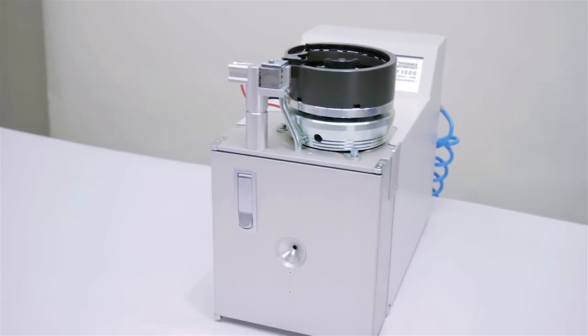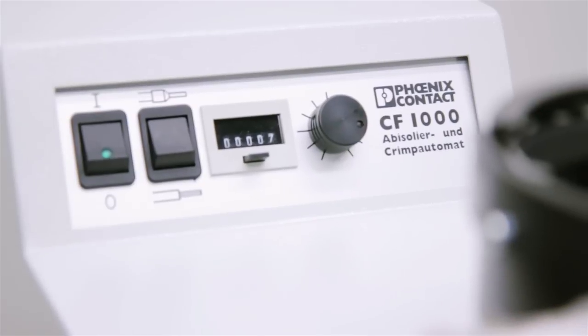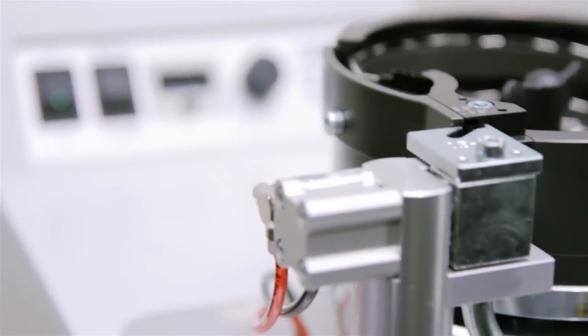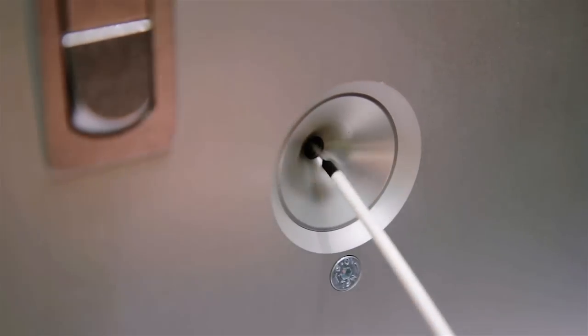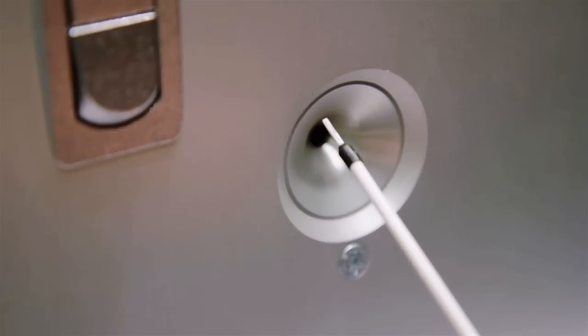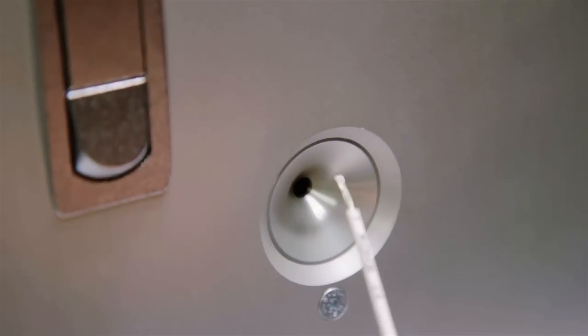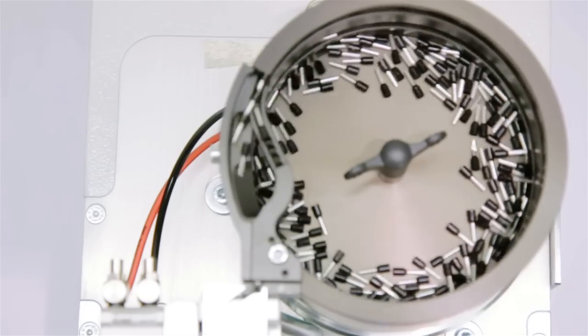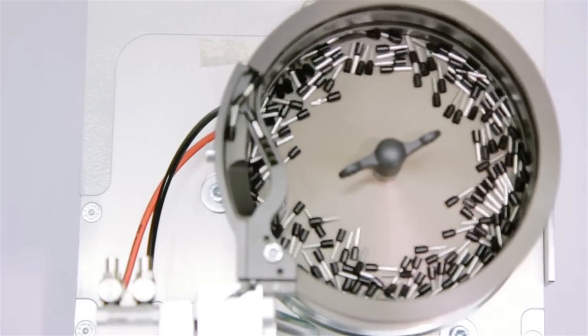Unlike our CF-3000, which has the ability to strip and crimp up to 450 wires an hour, this unit will strip and crimp approximately 1,200 ferrules an hour and has the option to just strip the wire. Also, the CF-1000 uses loose ferrules where the CF-3000 uses reeled.